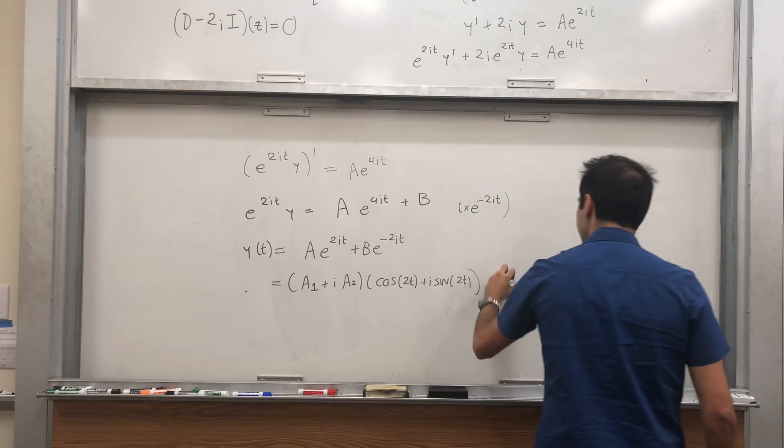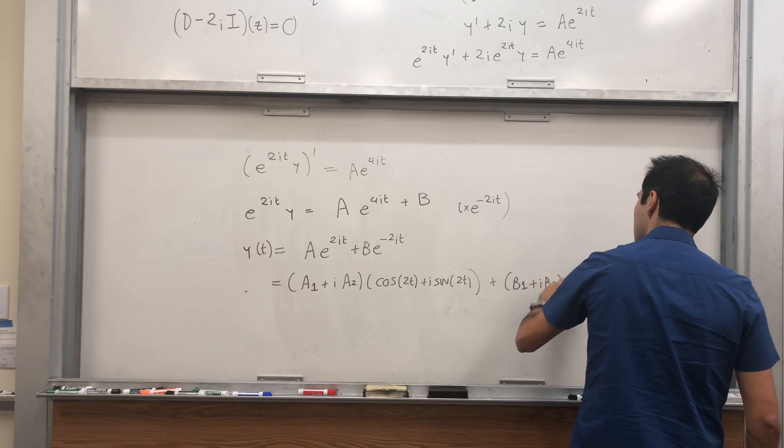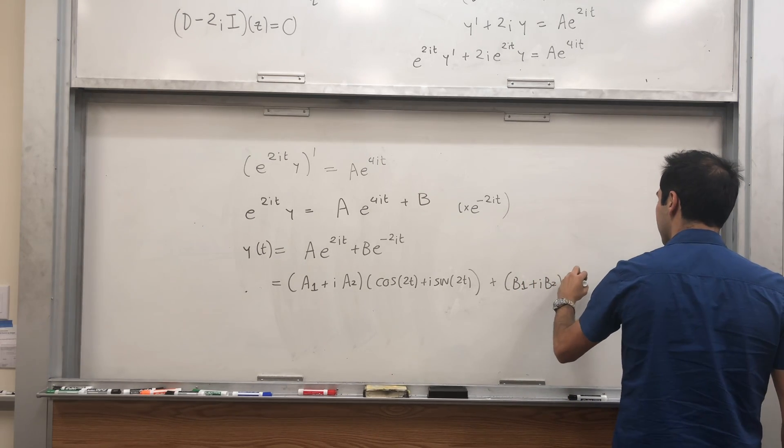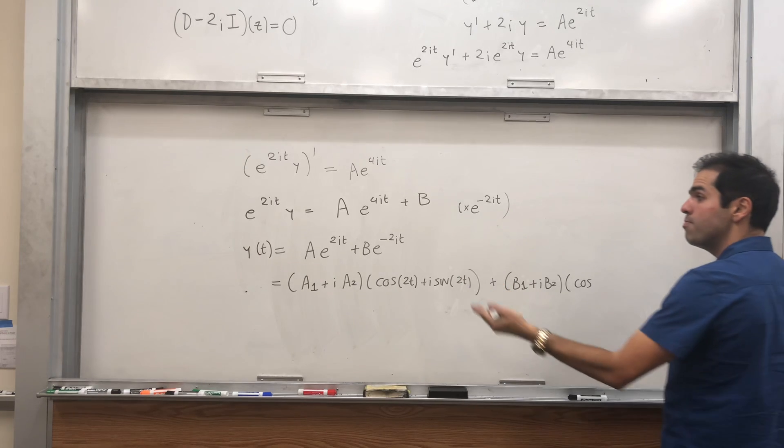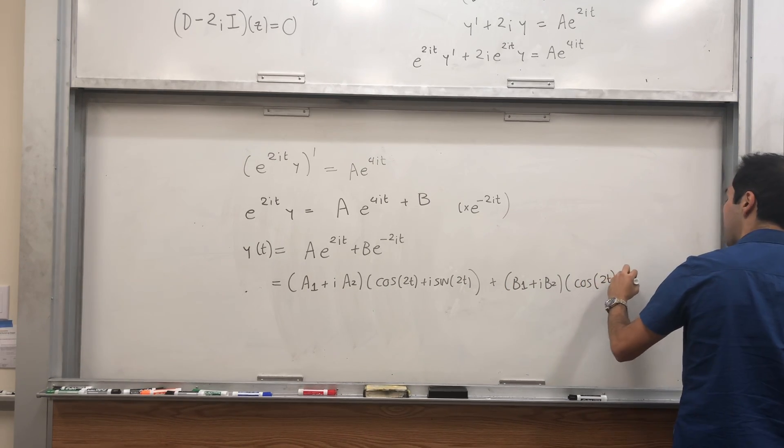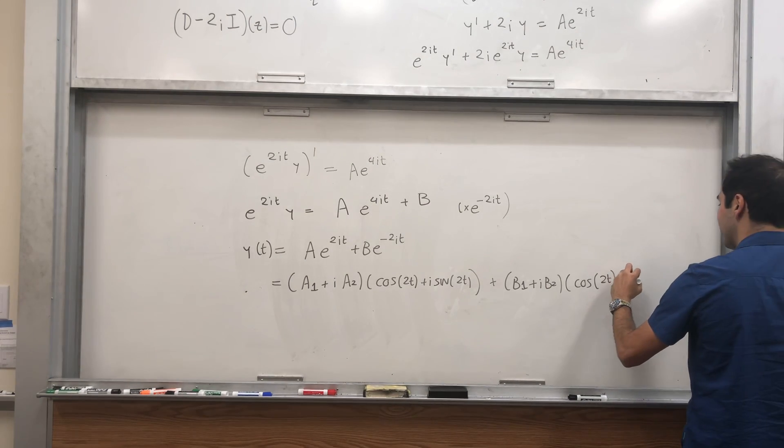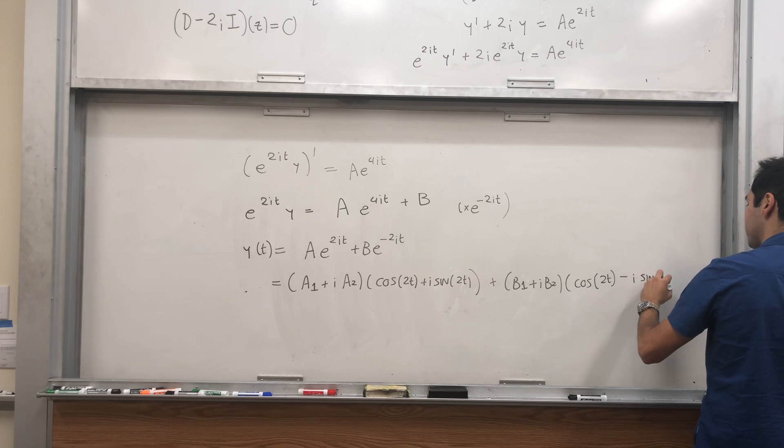And same with B, that's b1 plus ib2. And then cosine of minus 2t, which is cosine of 2t, and sine of minus 2t, which is minus sine of 2t, so minus i sine of 2t.